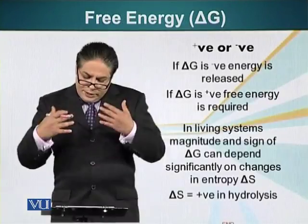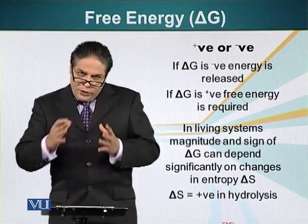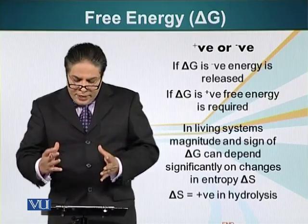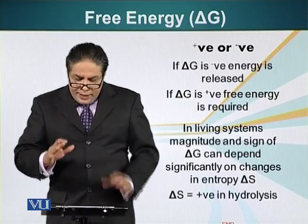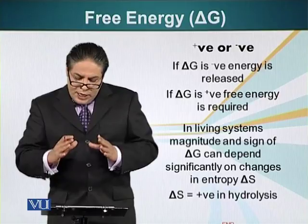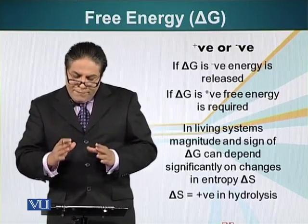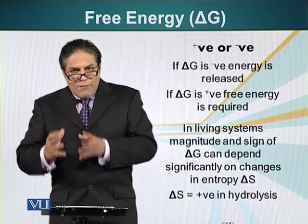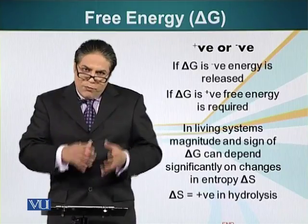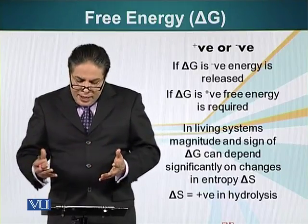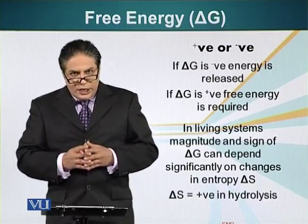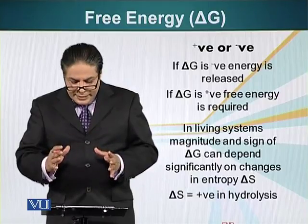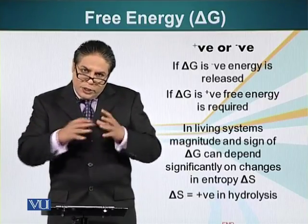We have seen that free energy can be used to explain many things. The main point to reiterate is that delta G — change in free energy — is negative when energy is released in a process, and delta G is positive when we have to add energy into the system for a reaction to occur. In living systems, the magnitude and sign of delta G can significantly depend on entropy, delta S, so processes that go from order to disorder are more preferred.